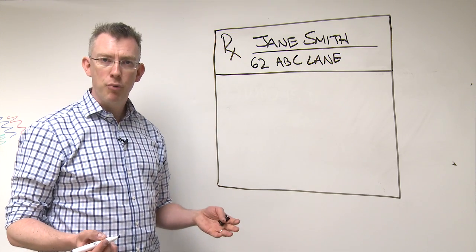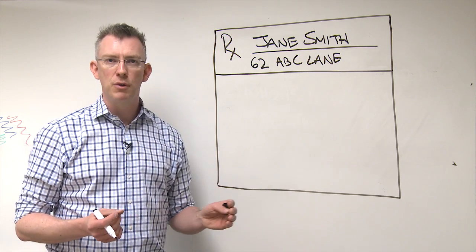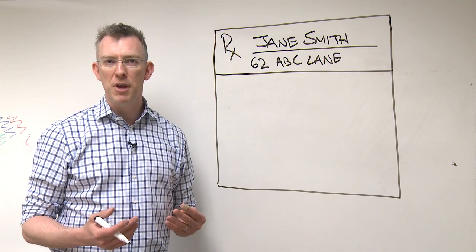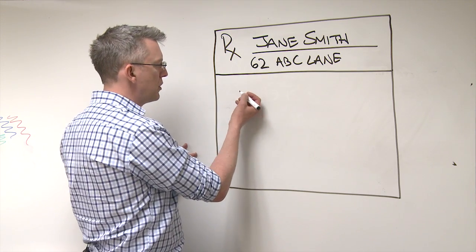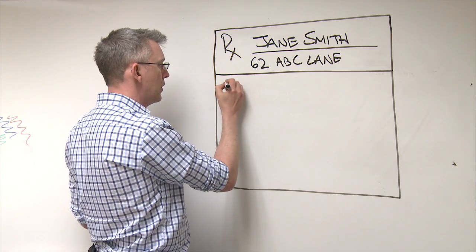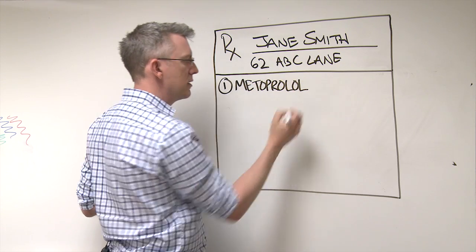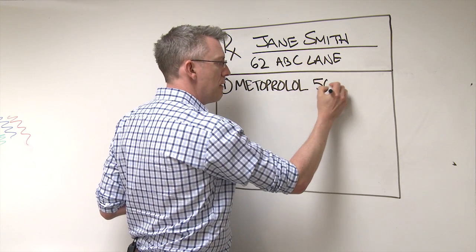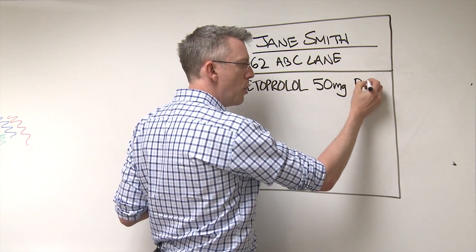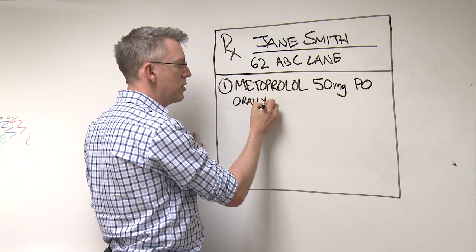You want to print, primarily print, or have ridiculously clear writing, because the purpose of this is a communication to a pharmacist on how to mix or dispense a certain type of therapy for a patient. You don't want any errors to happen. And so frankly, printing is the best, and if you have more than one medication, numbering them is very handy as well. So metoprolol, nice and clear. Make sure you have the drug dosage, 50 milligrams, and then you can say PO for orally, or you could even write orally or you could write by mouth.